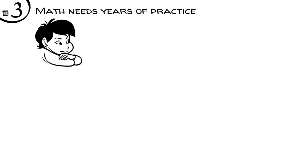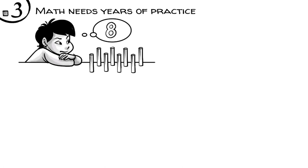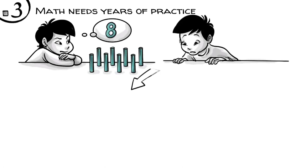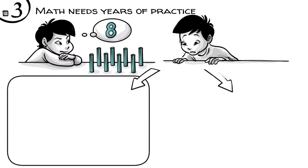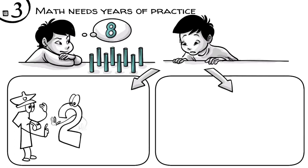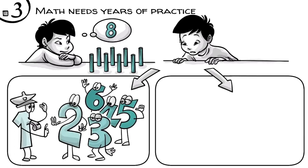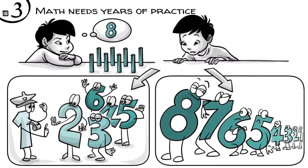Math needs years of practice. This becomes clear when we look at how children learn to understand a number, say eight. Not the symbol eight, but the idea of the quantity of eight. To internalize this seemingly simple idea, children need a lot of practice in two skills. First, they need to learn how to create order, and then, later on, how to create hierarchical relationships.